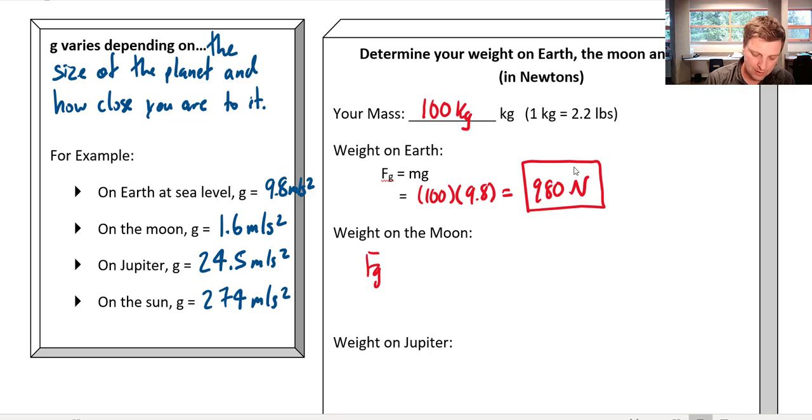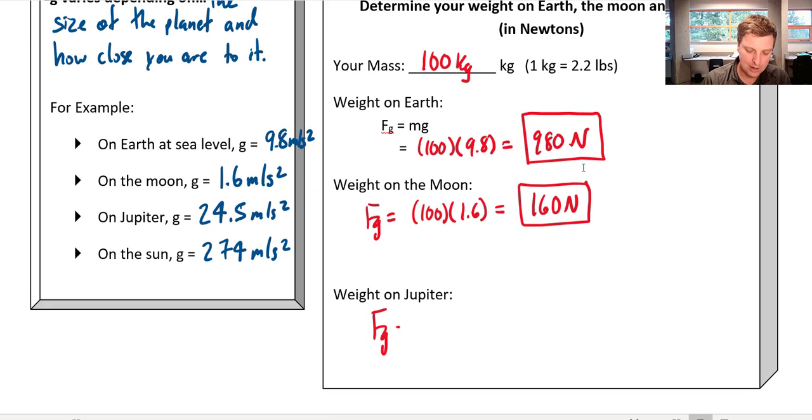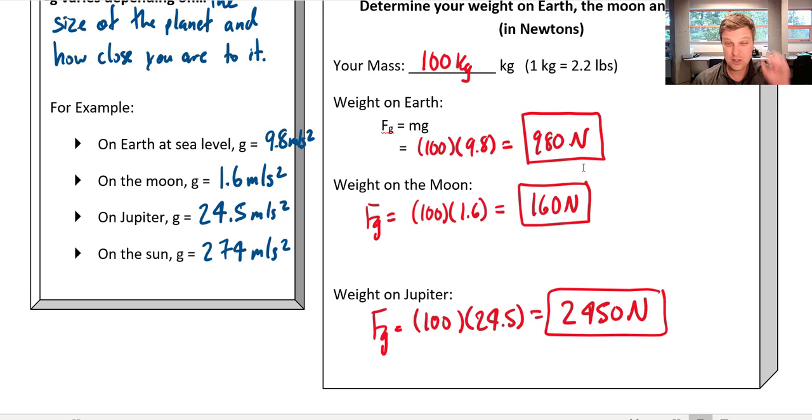So the weight on the Moon, Fg on the Moon, instead of it being 100 times 9.8, it would be 100 times 1.6. And so I would weigh 160 Newtons. That's like right around six times smaller. So I would feel six times lighter as I'm walking around on the surface of the Moon. And then on Jupiter, Fg would equal 100 times 24.5 would be 2450 Newtons. So on the surface of Jupiter, I would feel two and a half times heavier as I walk around. It's like I've got an extra me and a half weighing me down everywhere that I go. Okay, so that's it for our first lesson on forces and gravity.